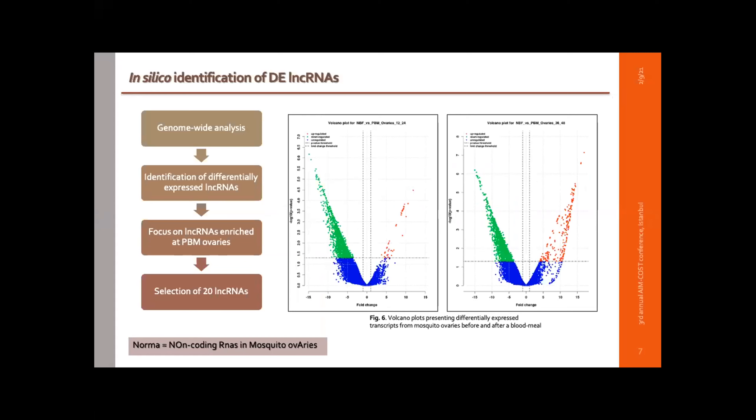We analyzed the data, identified the differentially expressed genes, and selected 20 of them, which we named with the acronym NORMA, standing for Non-coding RNAs in Mosquito Ovaries.